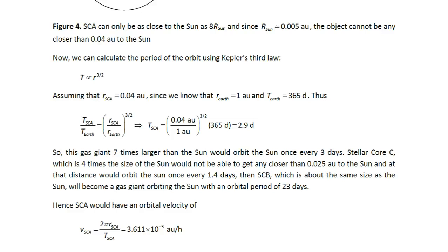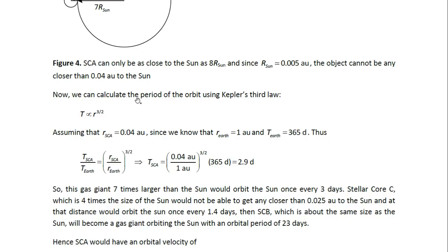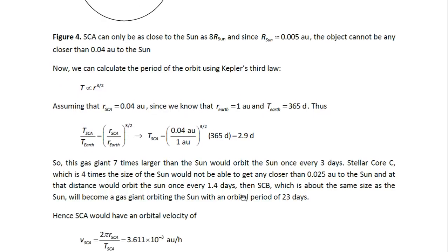Stellar core C, which is four times the size of the Sun, would not be able to get any closer than 0.025 AU to the Sun. And so its orbital period would turn out to be 1.4 days. Then stellar core B, which is about the same size as the Sun, will become a gas giant orbiting the Sun with an orbital period of 23 days. So that's the one that was at a distance of 0.16 AU.